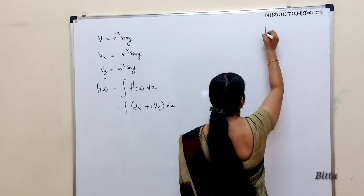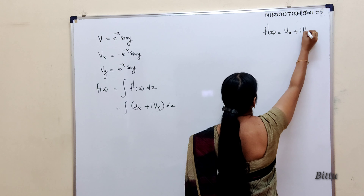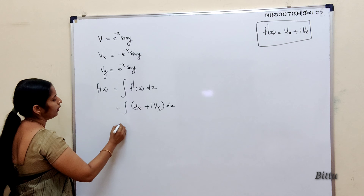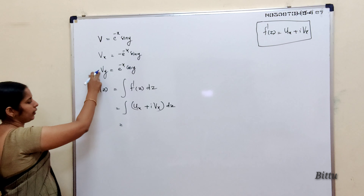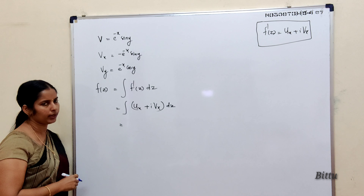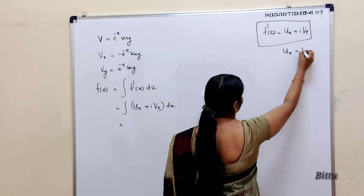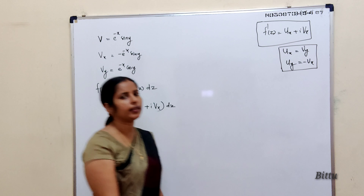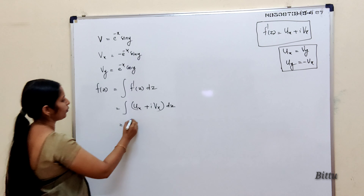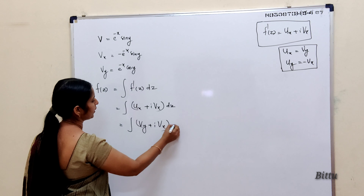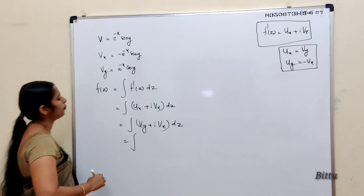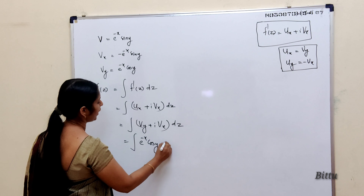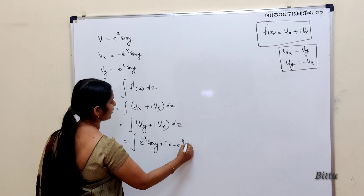Here we have to find f(z), so we replace u_x using the Cauchy-Riemann equations. The Cauchy-Riemann equations are: u_x = v_y and u_y = −v_x. So u_x = v_y. Therefore f'(z) = v_y + i·v_x. Substituting the values of v_y and v_x: f'(z) = e^(−x) cos(y) + i·(−e^(−x) sin(y)).